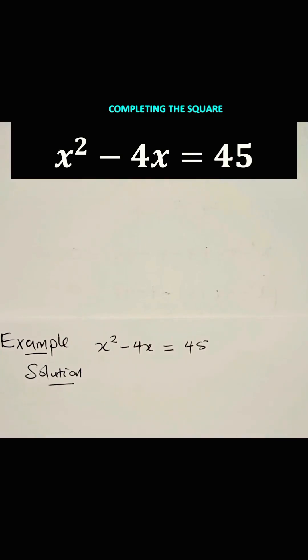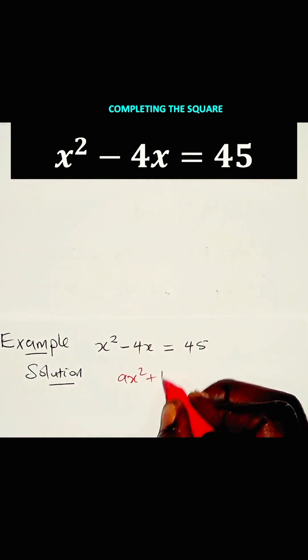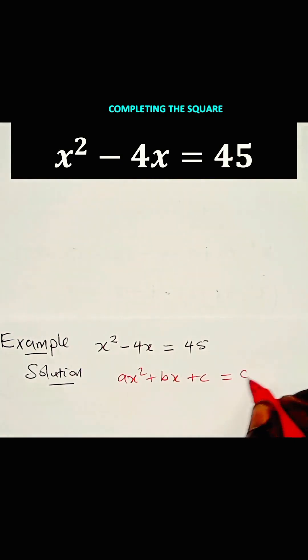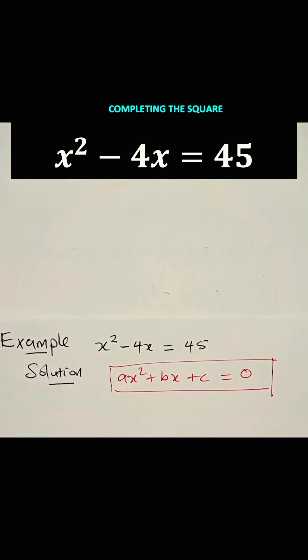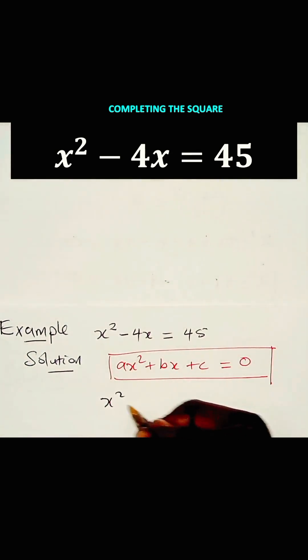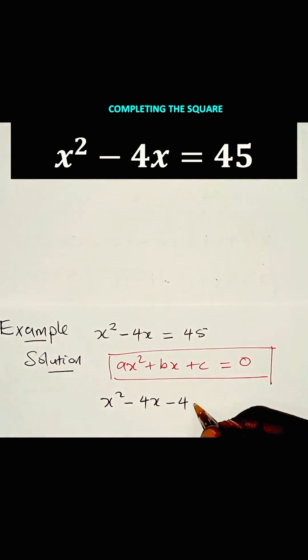We need to write this equation in the form AX squared plus BX plus C is equal to 0. And that means we need to take this 45 to the left-hand side of the equation so that we have X squared minus 4X minus 45 is equal to 0.